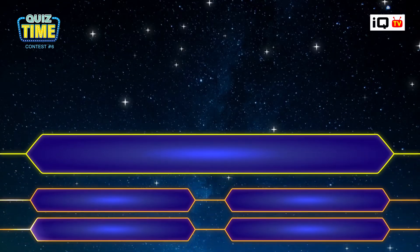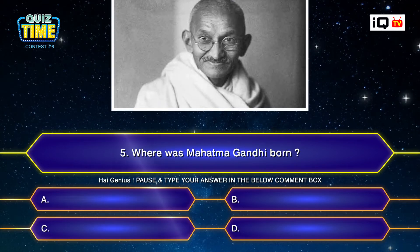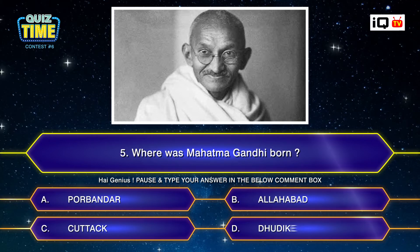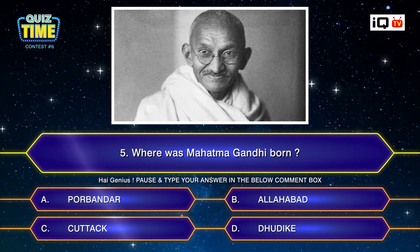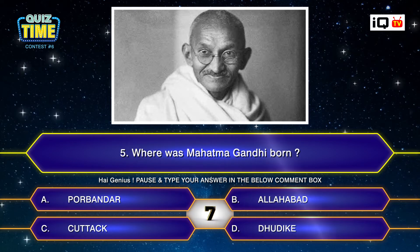Number five: Where was Mahatma Gandhi born? A. Porbandar, B. Allahabad, C. Cuttack, D. Dhudike. Your time starts now. Type your answer down.